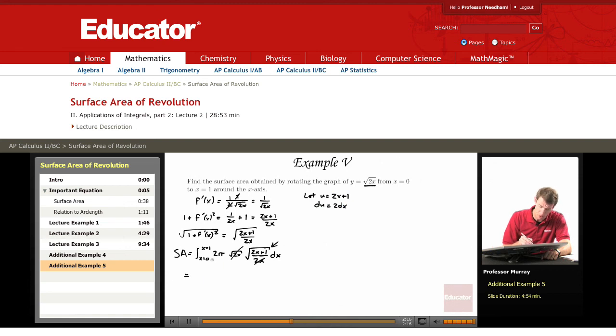So I'm going to pull the 2 pi outside. We get 2 pi times the integral from x equals 0 to x equals 1 of the square root of u. And dx converts into du, except that dx is 1 half of du, so I'll put that half outside.